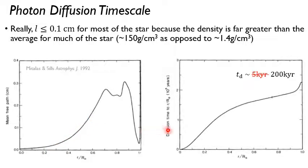And so then your photon diffusion time when you actually calculate it in a solar model to get to the surface is really more like 200,000 years as opposed to that 5,000 years that we had. So that would be your actual photon diffusion time scale from a more sophisticated calculation.